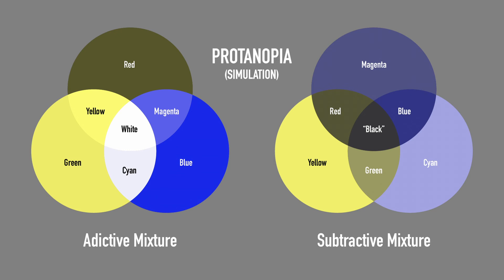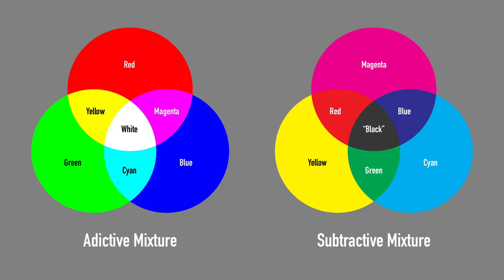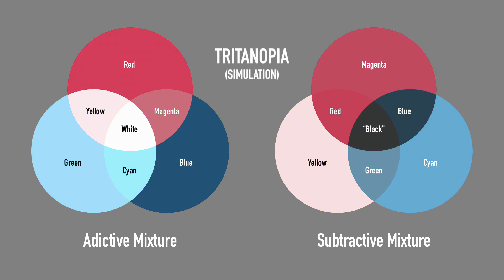Tritanopia — very rare. Called tritanomaly, it is the absence or deficiency of cones sensitive to short waves — blue and violet — resulting in the inability to distinguish blue from green. Cyan and green appear to be the same color, changed only in terms of luminosity.